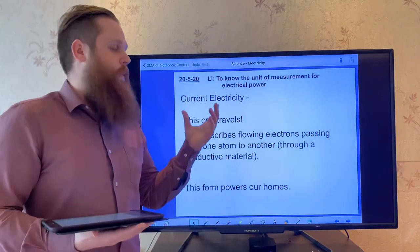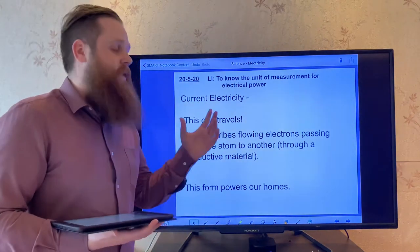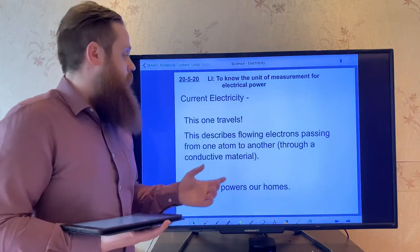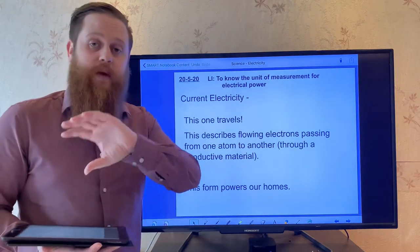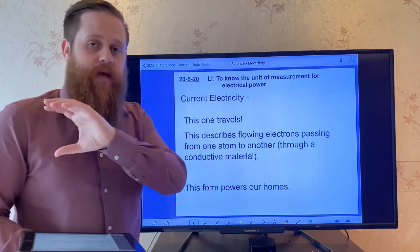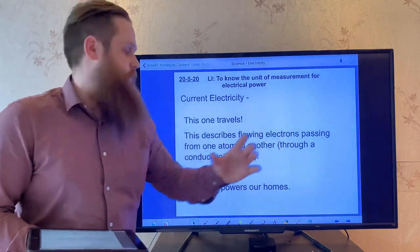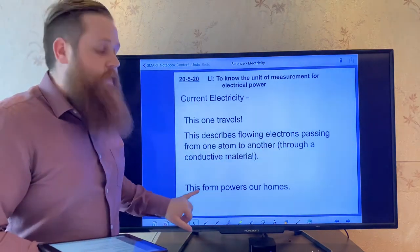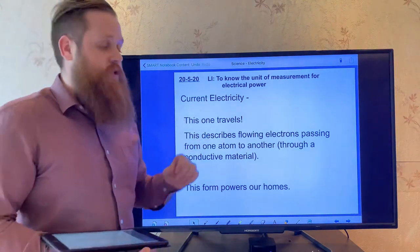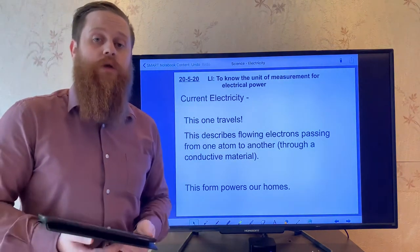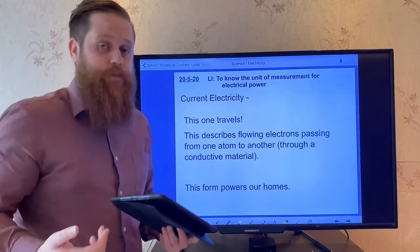And we're going to be looking a little bit more at current electricity. This is one that travels. This is described as flowing electrons moving from one atom to another, those negative electrons moving from one to another. This type of electricity, this current electricity, is what powers our homes, from the lights to the television.